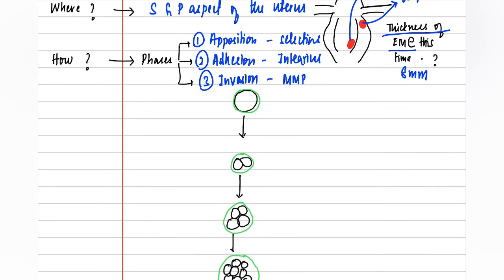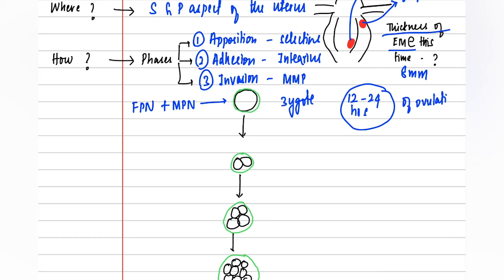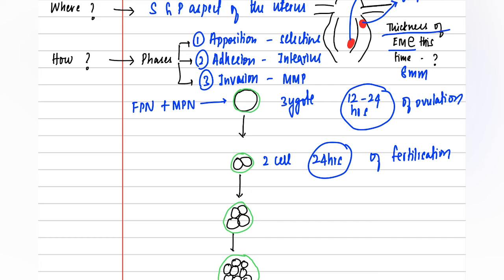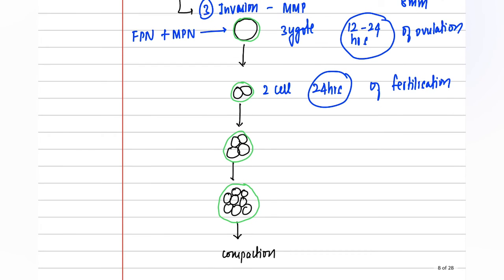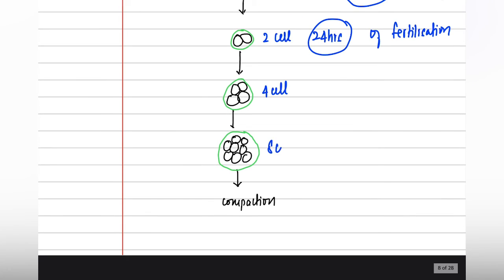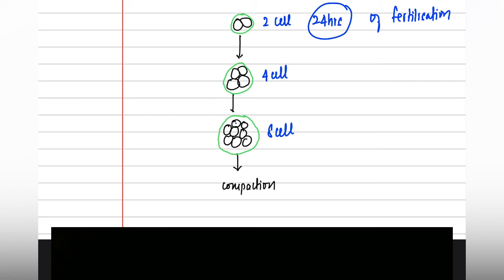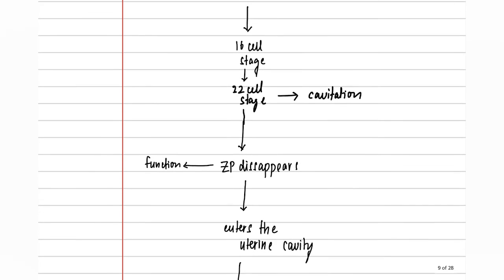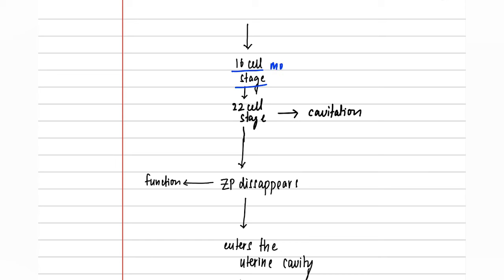After the female pronucleus and the male pronucleus combine, a zygote is formed around 12 to 24 hours after ovulation. This divides to form the two-cell stage, which occurs around 24 hours after fertilization. It then divides to form the four-cell stage and the eight-cell stage. Until the eight-cell stage, all the cells are loosely arranged, and the cells undergo a process of compaction where they are all brought together.